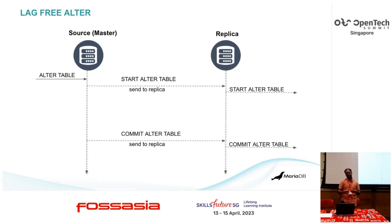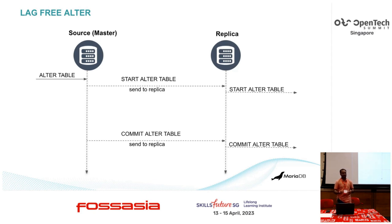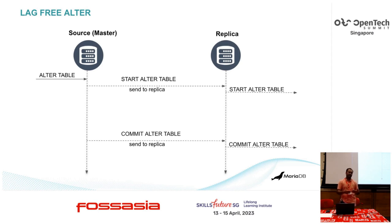When the alter starts executing on the master, immediately a start alter event is written to the binary logs and sent to the slave at the same time. On the replica, you need to have parallel replication. Once the event is sent to the replica, immediately one more SQL thread starts executing the start alter command.